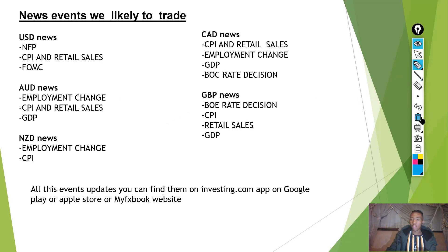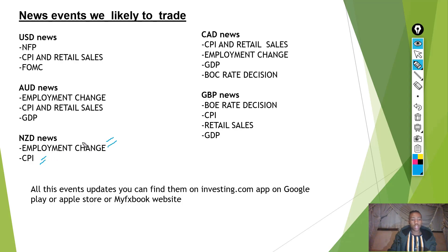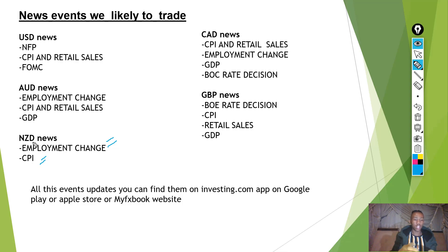Now let's go to NZD news. I want to tell you that the NZD news doesn't work as much as the AUD and USD news, so when they do occur, make sure you trade them. Under NZD news we have the Employment Change and the CPI — focusing on unemployment and employment rates, and consumer spending and prices. The pairs we trade for NZD news are NZD/USD and NZD/JPY when NZD is the base currency, and EUR/NZD when NZD is the quote currency.